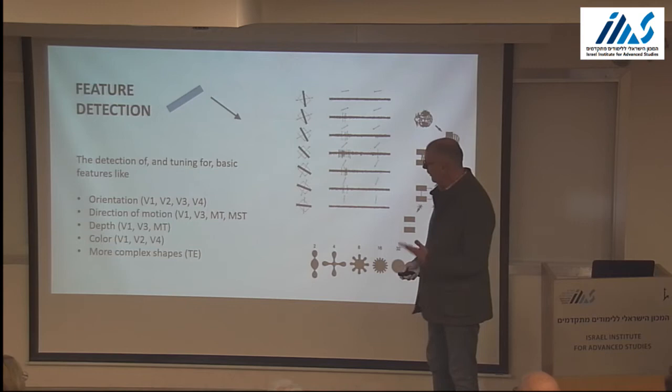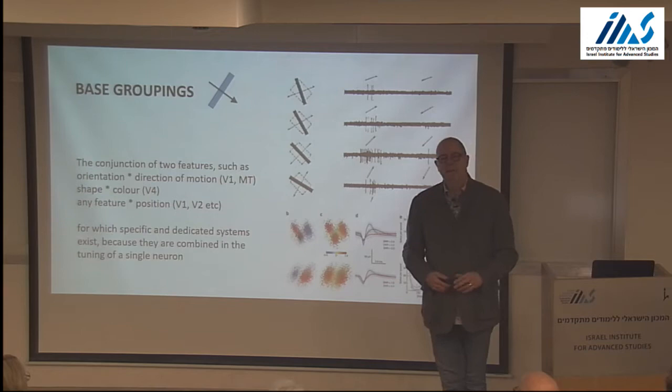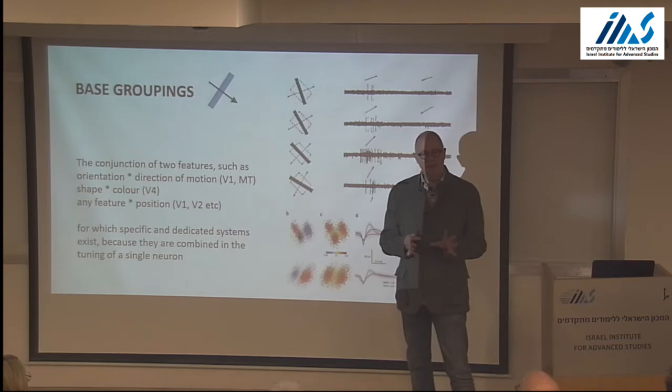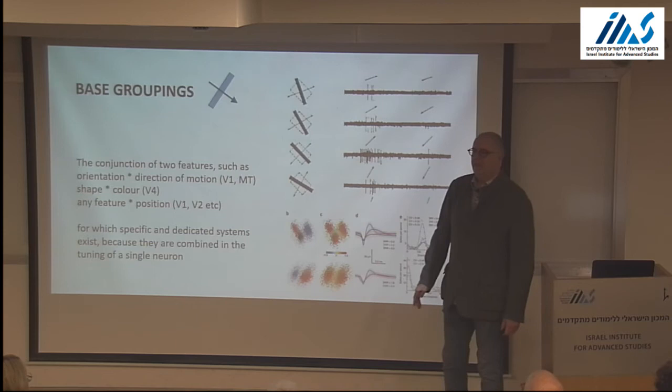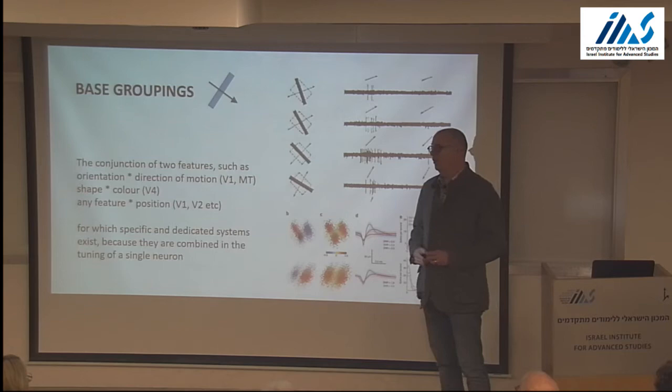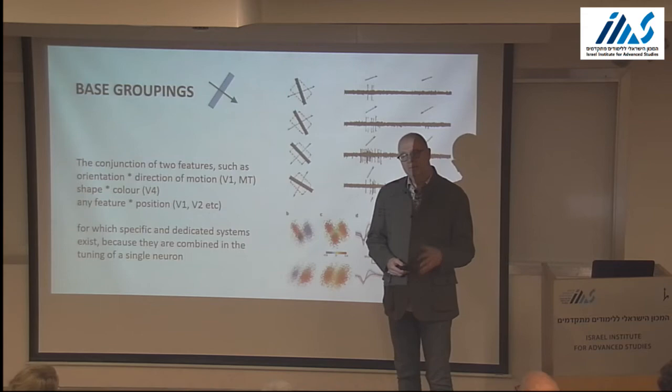It should be noted that while executing these feature detections, these neurons often also combine — already combine — these features, in that they are simultaneously tuned to, say, direction of motion and orientation, as shown in this example. So a neuron only responds to this orientation when it moves in a particular direction, not in the other one. This is what Peter Wolfsman has called base groupings — in the sense that two different features are now grouped into the activity of a single neuron.